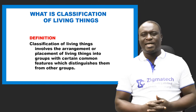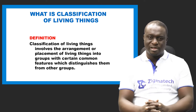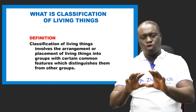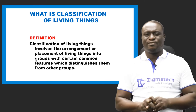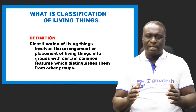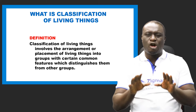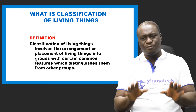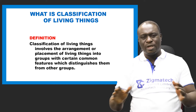The first thing we're looking at is the definition of classifications of living things. As the name implies, to classify means to arrange or to put into a group. So, classifications of living things simply means the arrangement or placement of living things into groups with certain common features. These common features help us to distinguish between groups.